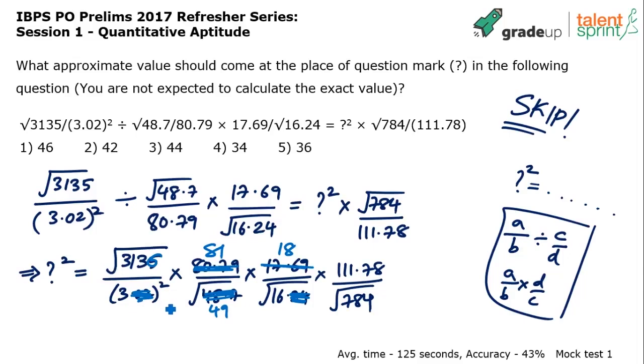Similarly, 3.02 has been taken 3. Why did we take 3135 as 3136? Because in the back of my mind, I know that 56 square is 3136. Now, are we expected to learn up to 56 square by heart? No.